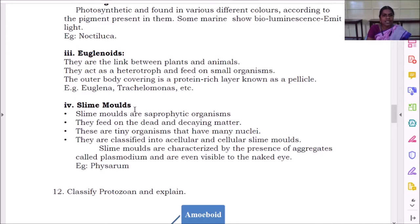Next is slime molds. Slime molds are saprophytic organisms. They feed on dead and decaying matter. These are tiny organisms that have many nuclei. They are classified into acellular and cellular slime molds. Slime molds are characterized by the presence of aggregates called plasmodium and even they are visible to the naked eye. Example is physarum.